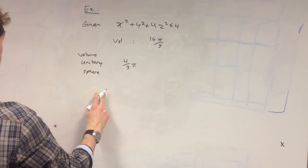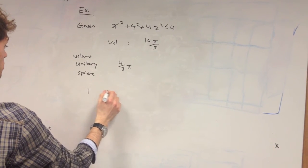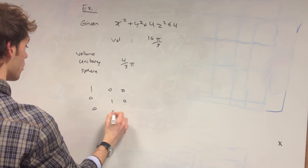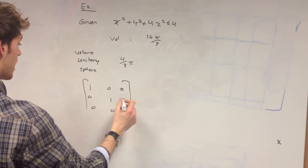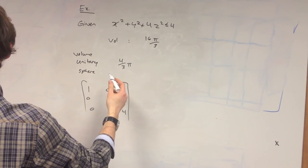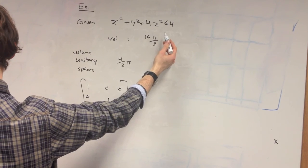And if you notice the matrix that we get from this ellipsoid, which looks like this, and you multiply this matrix by the unit sphere, you'll actually get back our ellipsoid, our given ellipsoid.